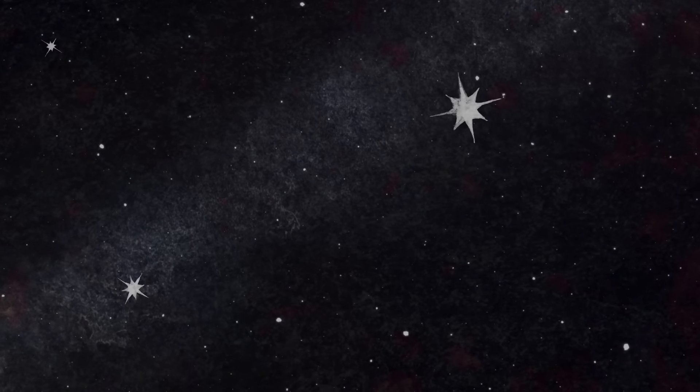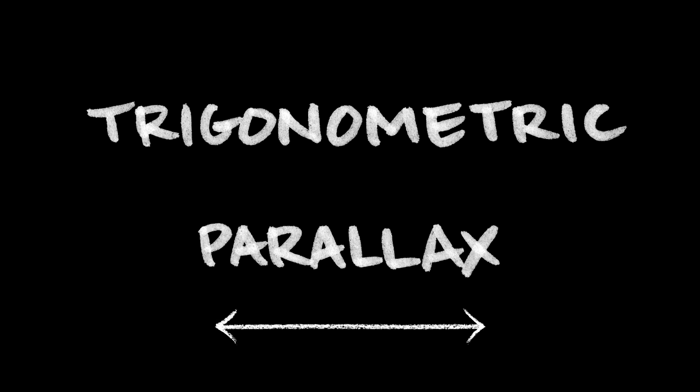For objects that are very close by, we can use a concept called trigonometric parallax. The idea is pretty simple. Let's do an experiment.